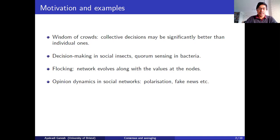We might also be interested in opinion dynamics on online social networks — for instance, how polarization of opinions happens and the formation of distinct communities holding opposed opinions but rarely communicating with each other, or how fake news takes hold, spreads, and then is resistant to further evidence. These are examples which fall outside the scope of what we discuss here, since there is no consensus — instead there is polarization — but it is also an interesting phenomenon in a related context.